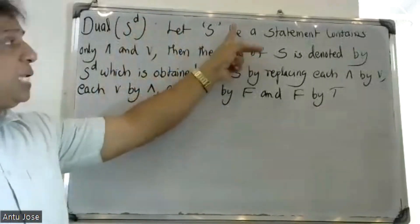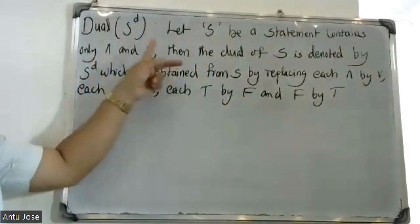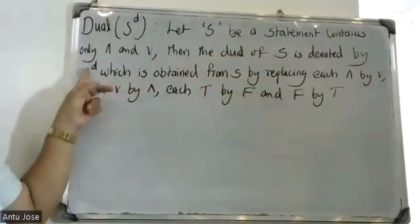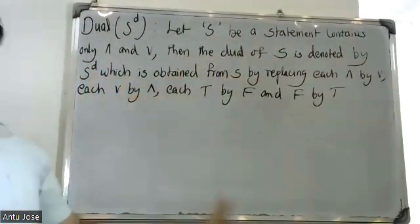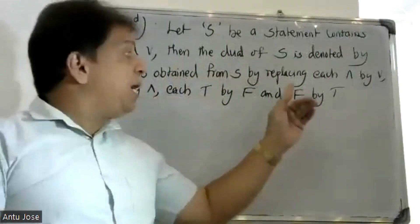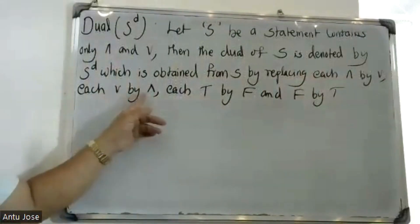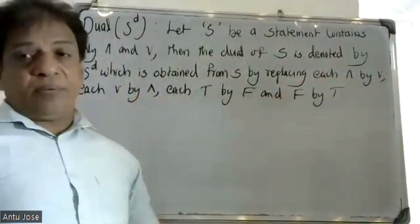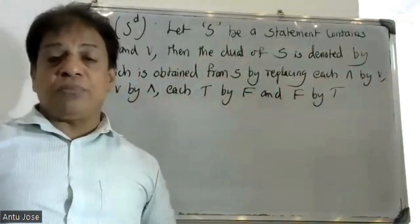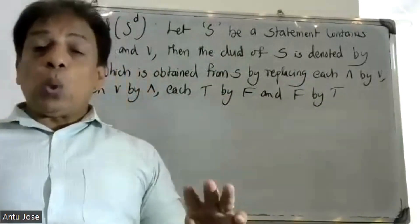A Boolean statement contains only AND and OR. Then the dual of S, denoted S^d, is obtained from S by replacing each AND by OR, each OR by AND, and T by F and F by T.